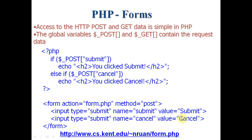We have another program — the server program. When we click any one of the two buttons, it will activate form1.php. Whether we press the first button or the second button, in both cases it will start form1.php. On the server side, we have written: if $_POST['submit'] — meaning if we are getting the value of the first button — it means we have pressed the Submit button.